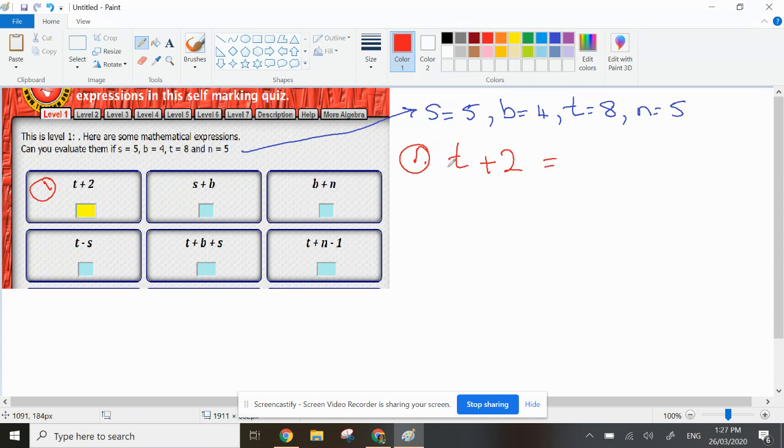Now for this one here, the T up here is like if you're doing a code, the T they tell you is 8, so instead of writing T, it's like saying that it's somebody's number, so it would be somebody's number which is 8 plus 2, and 8 plus 2 is 10.